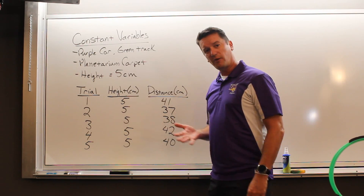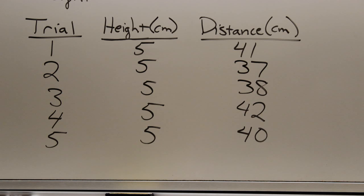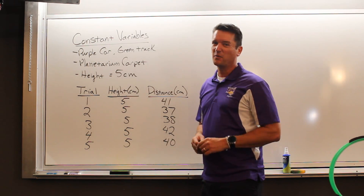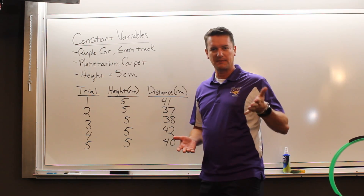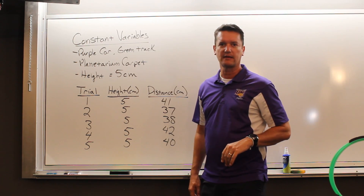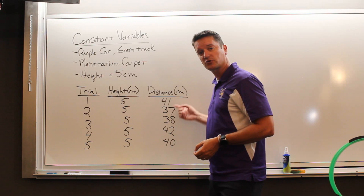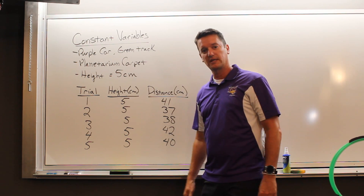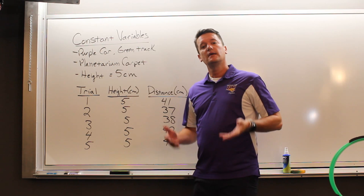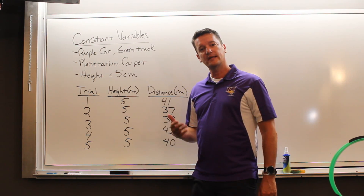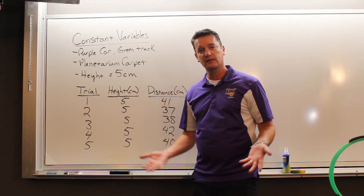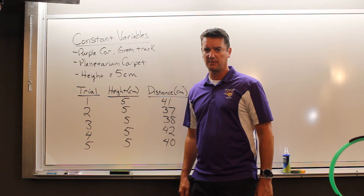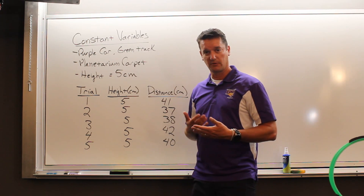In my experiment I got 41, 37, 38, 42, and 40. If I had one that was really off — like 10 — we'd call that an outlier. Something probably happened, like the car coming off the track sideways. We want all our trials to be consistent; if they're not, we need to figure out what's wrong and do more trials. Now it's time for you to perform your experiment — set up a track, use any car and any ramp, stay consistent, and run your trials.